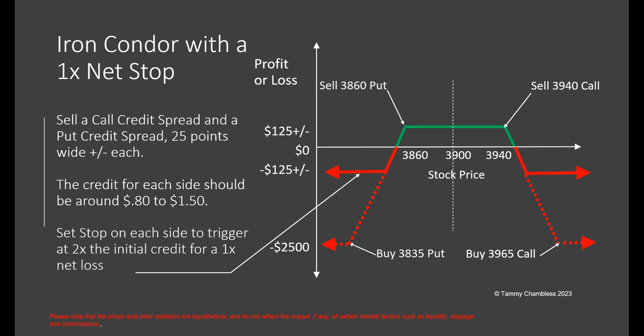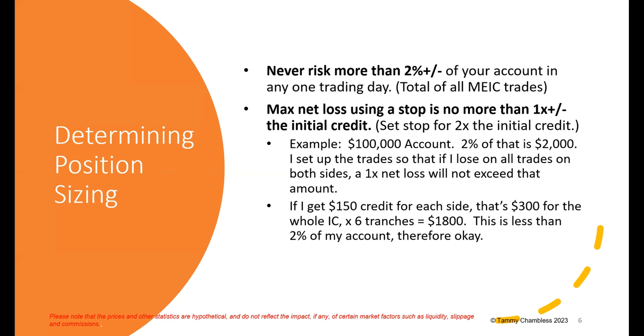Some of those trades are going to succeed and some are going to get stopped out - it's just part of the game. I always reiterate this: never risk more than 2% of your account on any one trading day, and that would be a total of all your MEIC trades. If you got stopped out on all of them, that would not exceed more than 2% of your account. I actually like to keep that down to more like one to one and a half percent, but with a smaller account two to two and a half percent might be fine.